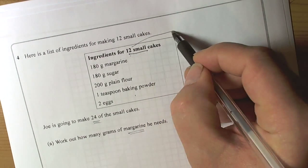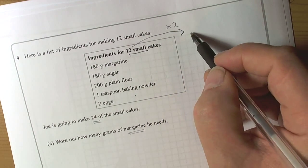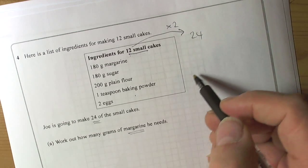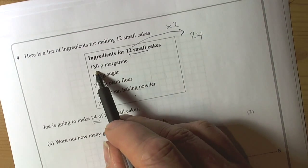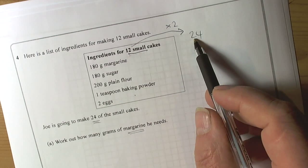So we can see straight away that 12 cakes if we double that up then we will get a recipe for 24. So basically we are going to double up every ingredient in here to make the 24 cakes.